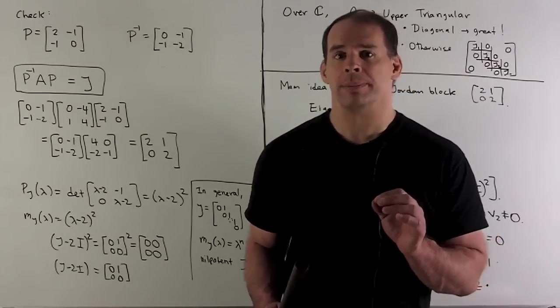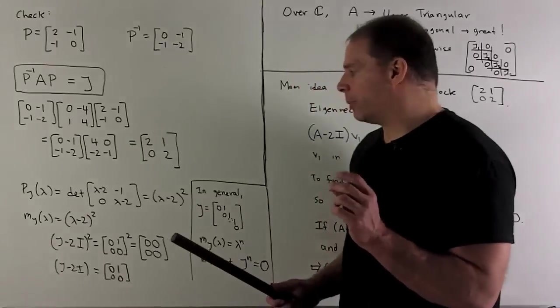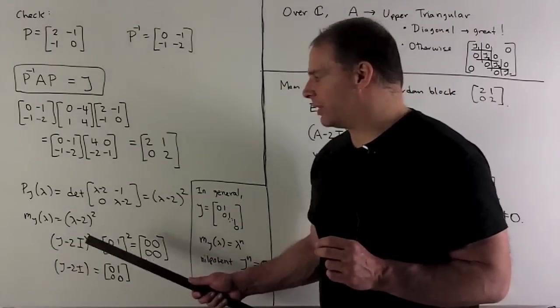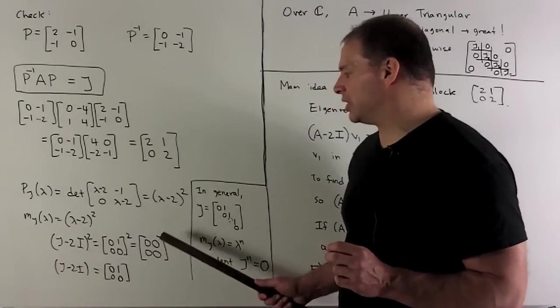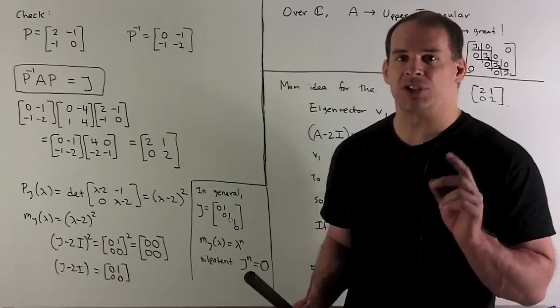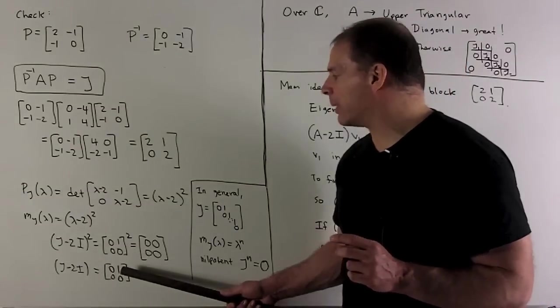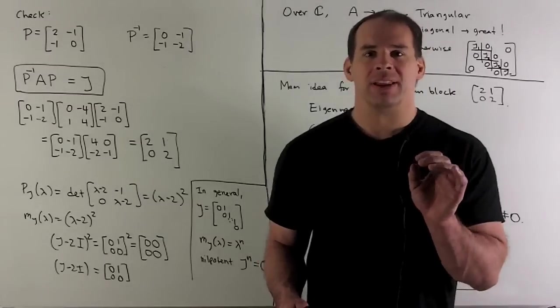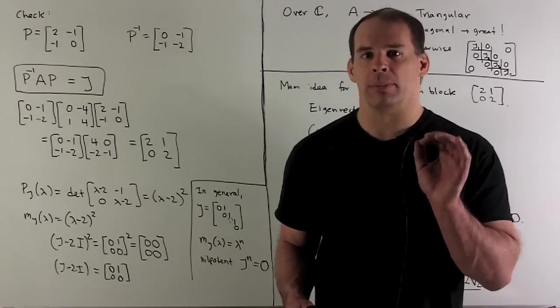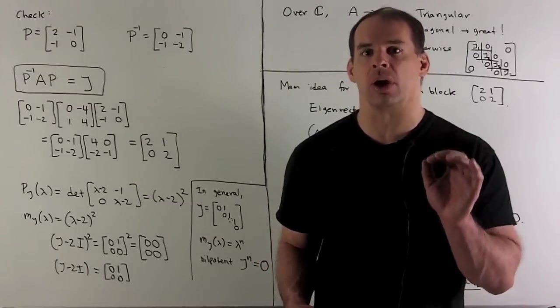For the minimal polynomial, here, we note by Cayley-Hamilton, I have (J - 2I)² gives me 0. J - 2I is just going to give me this non-zero matrix. But if you note, this non-zero matrix is a nilpotent matrix, meaning if I raise it to a power, we get 0.